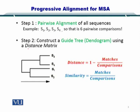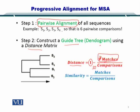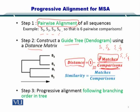Now that you know what a guide tree is, how do you compute the distance matrix? The distance matrix is simply: distance equals 1 minus the number of matches over the number of comparisons. Since you have already performed the pairwise alignment, you already know how many matches exist between S1 and S2, S1 and S3, and S1 and S4. Knowing the number of matches and comparisons, you can easily compute the distance between each pair of sequences.